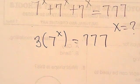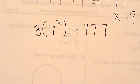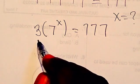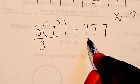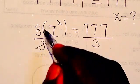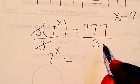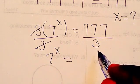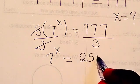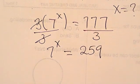Are you following? So now from there, what you are going to have is we are going to divide through by 3 here. If I divide through by 3, you see that this we cancel, we have 7^x equals now 777 divided by 3 will give us 259.